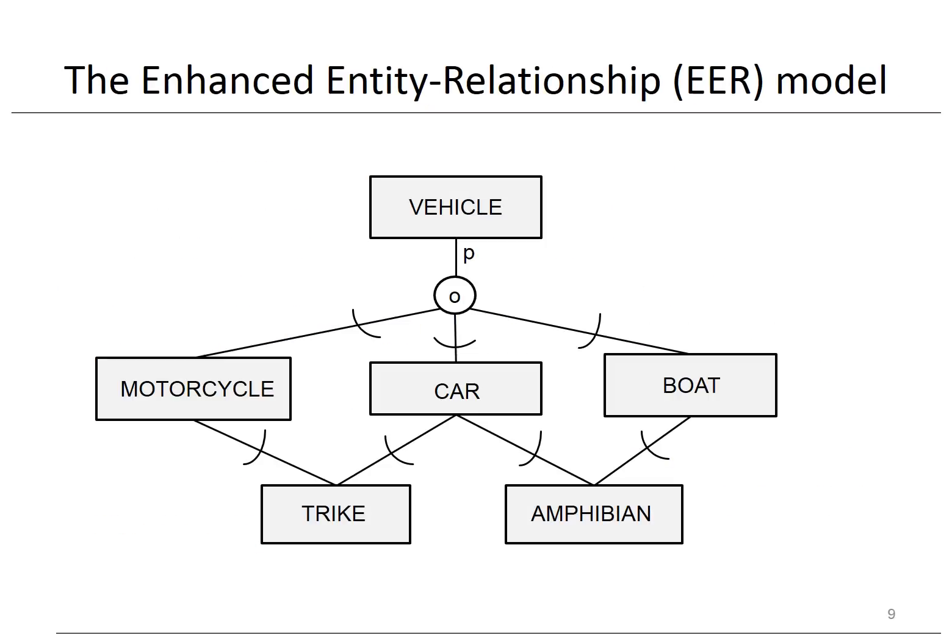Here you can see an example of a specialization lattice. The vehicle superclass is specialized into motorcycle, car, and boat. The specialization is partial and with overlap. Trike is a shared subclass of motorcycle and car, and inherits the attribute types and relationship types from both. Likewise, Amphibian is a shared subclass of car and boat, and inherits the attribute types and relationship types from both.